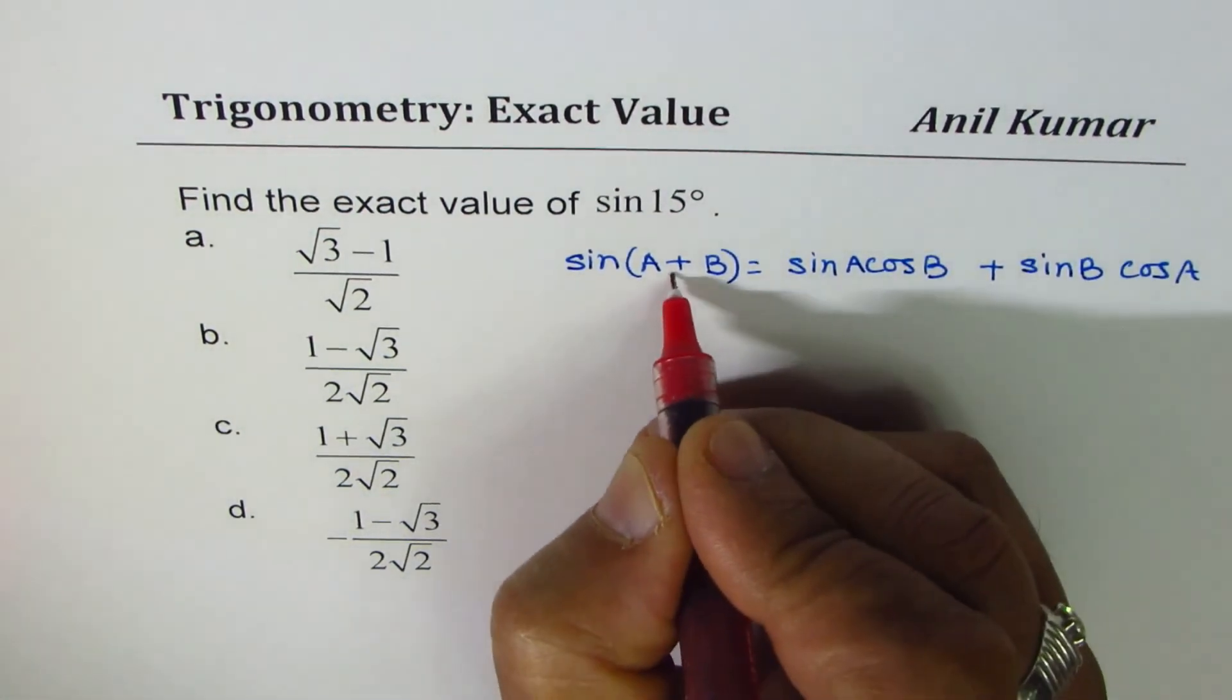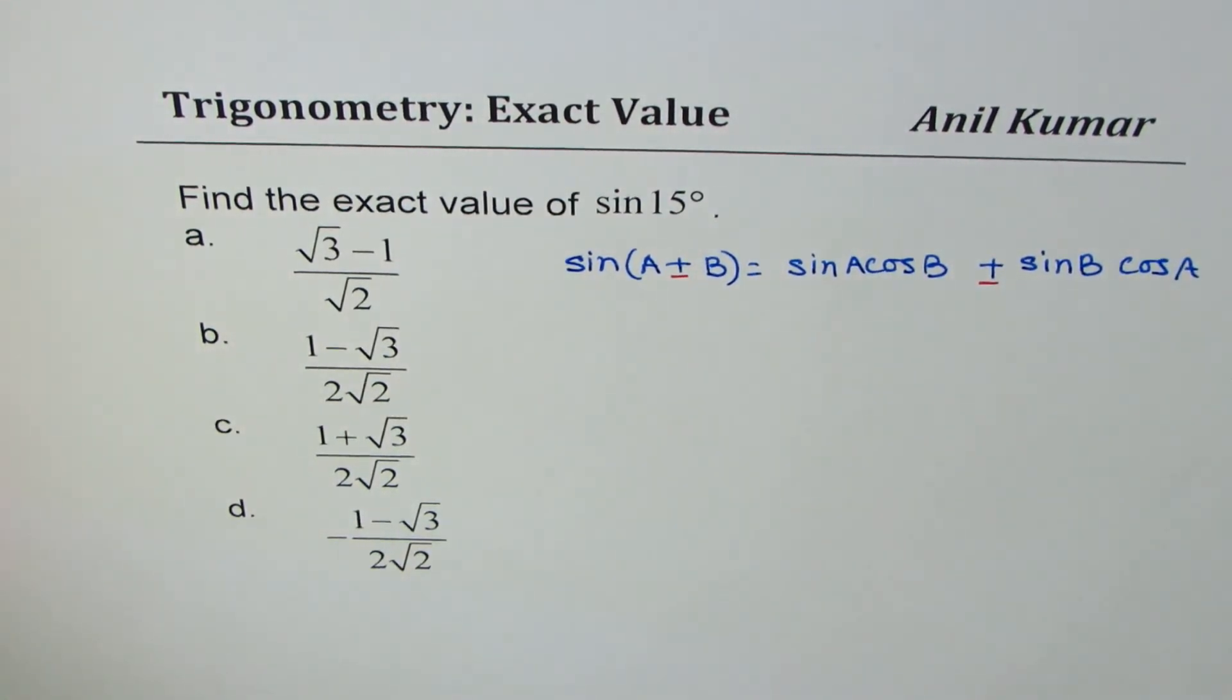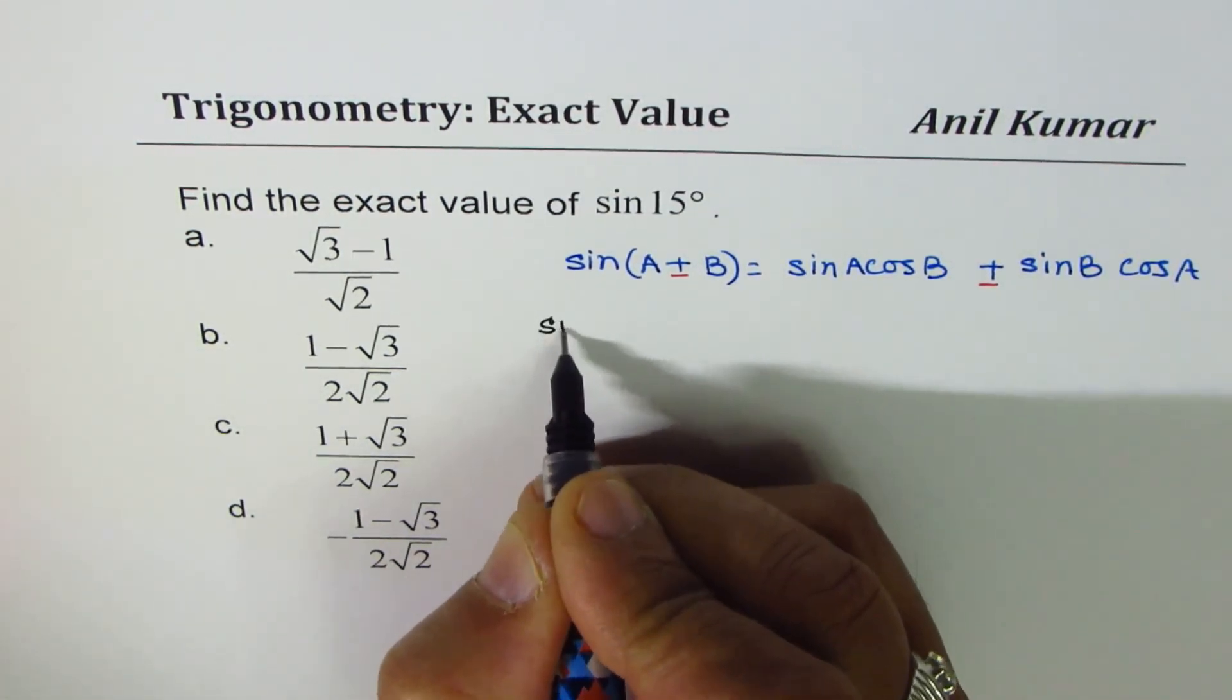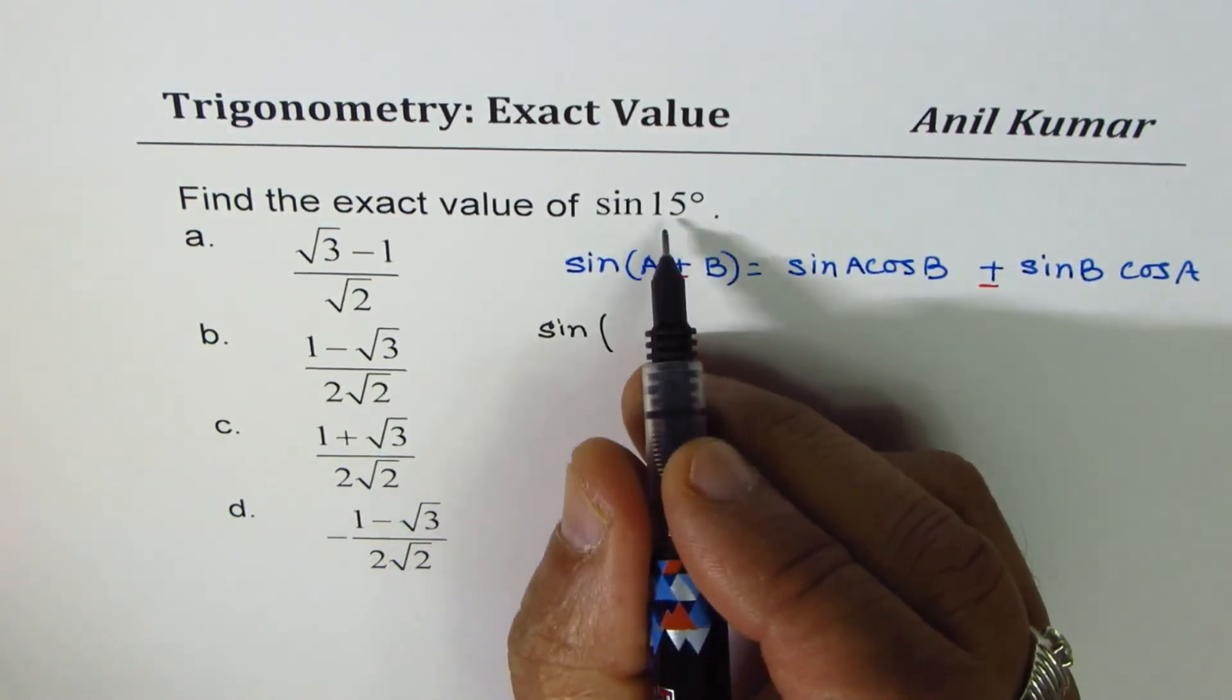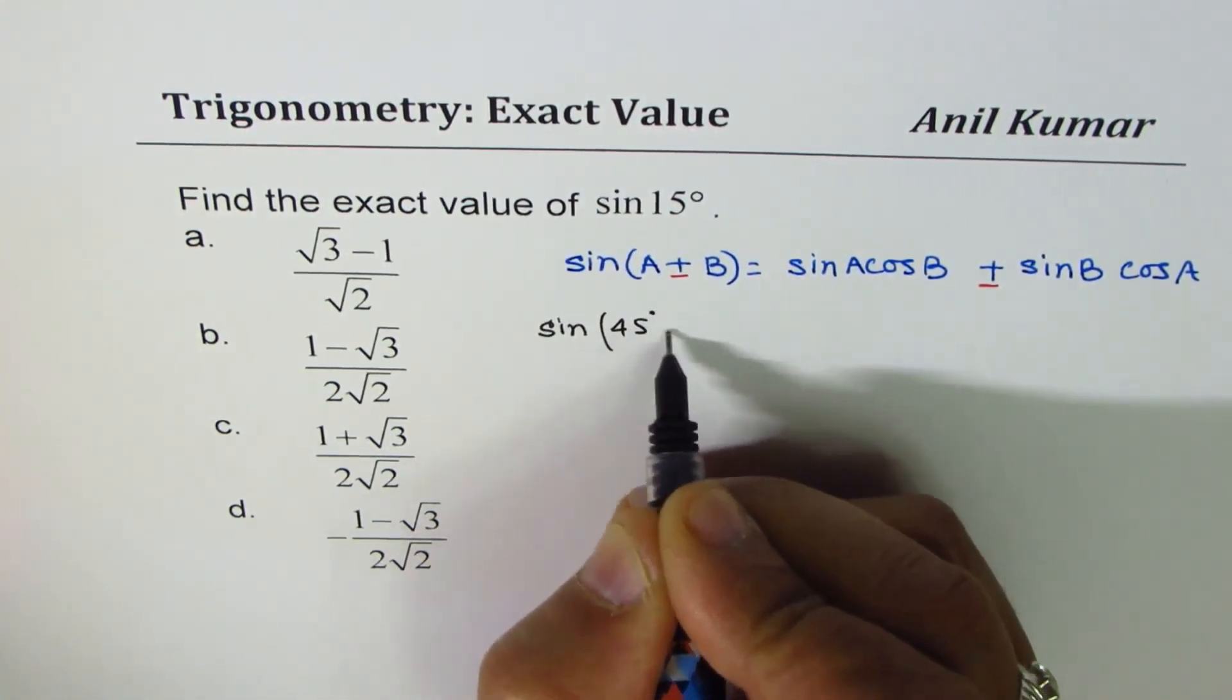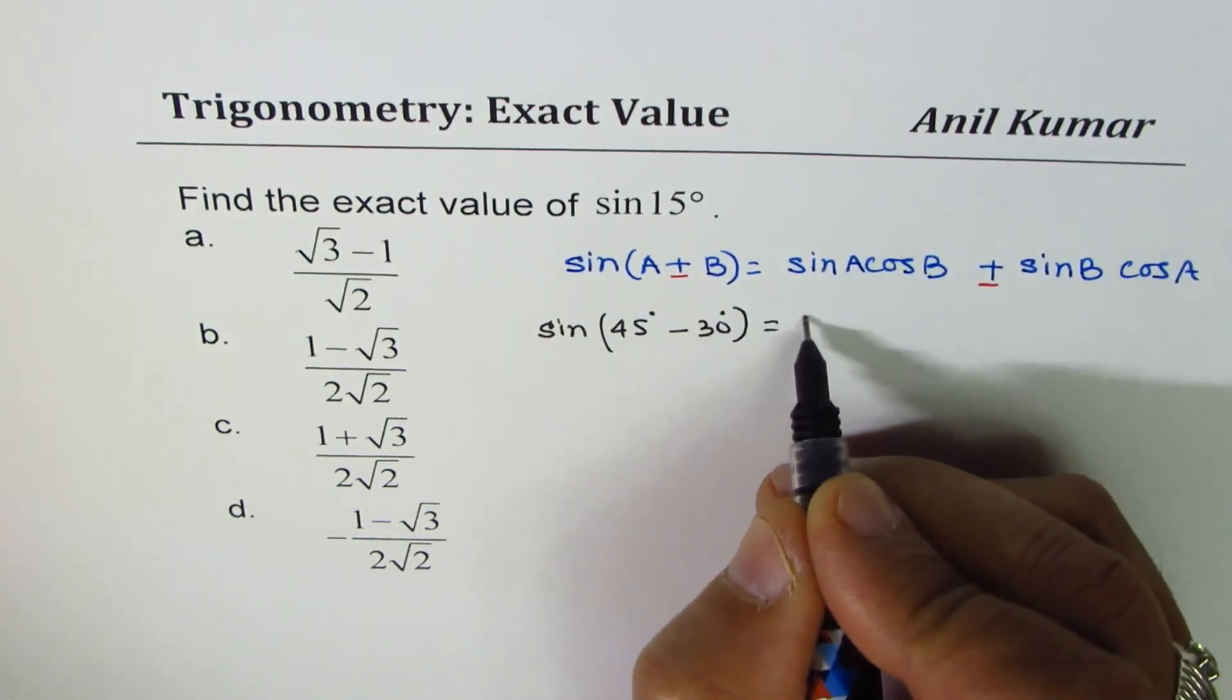However, if you have minus here then we have minus here. Now you can always pause the video, answer, and then look into my suggestions. 15 could be written as difference of two angles which could be 45 and 30. 15 could be written as 45 degrees minus 30 degrees.